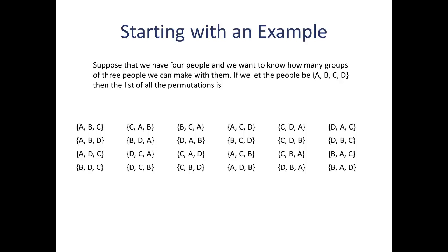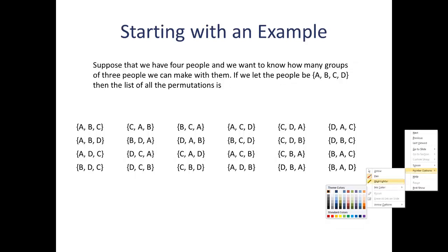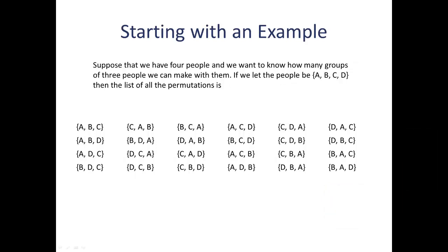Now, because the list covers the permutations, it's got too many entries for the number of combinations. Let me point out why here. Let's see if I can get my pen going. There we go. For example, A, B, C and C, A, B both represent the same combination. The order of the letters may be different, but both have just the letters A, B, and C, which means that they both represent the same combination.